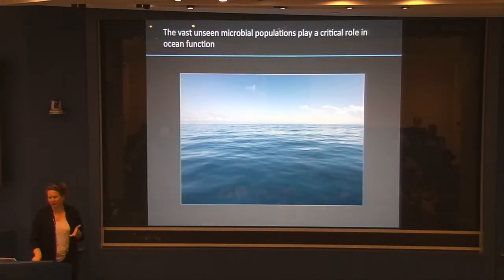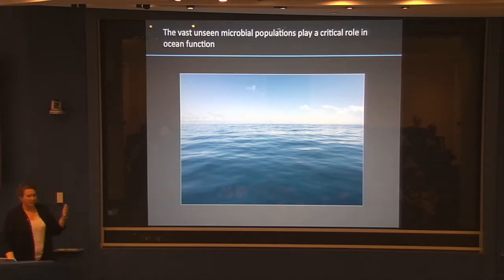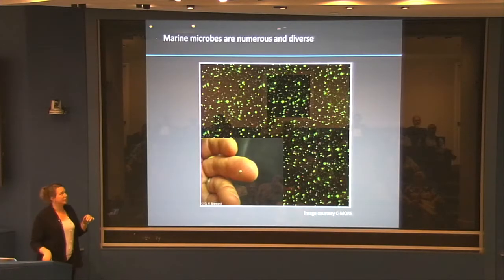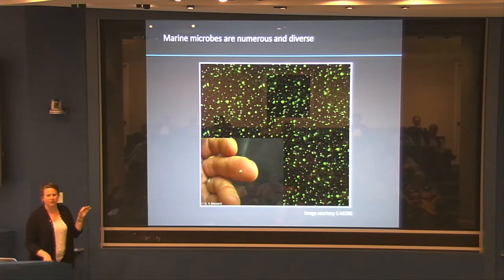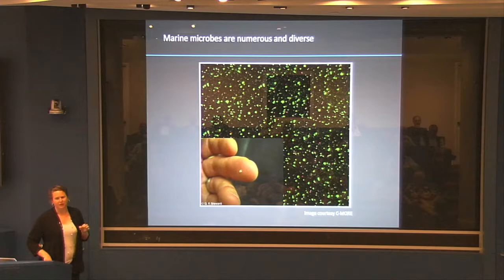What do fish production and carbon cycling have to do with each other? It's the microbes — that unseen majority — that play a critical role in ocean function, both as the base of the marine food web for fish production and in terms of carbon cycling. Even going out to sea, you have to remind yourself there's an unseen world there. Just one microliter of seawater, stained so you can image the microbes, shows them like stars in the sky — there are about a thousand bacteria and about 10,000 viruses in every microliter of seawater, wherever you go.